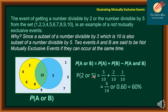So the probability of divisible by 2 or 5: P(A) has 5 elements out of 10, giving 5 over 10. P(B) has 2 elements — 5 and 10 — giving 2 over 10. The intersection P(A and B) has 1 common element — 10 — giving 1 over 10. Solving: 5/10 + 2/10 − 1/10 = 6 over 10, which equals 0.60 or 60%.